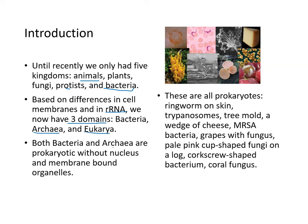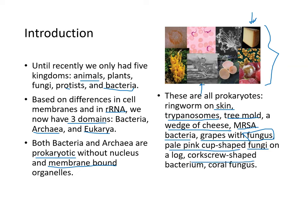Both bacteria and archaea are prokaryotes without nucleus or membrane-bound organelles. Examples of prokaryotes include ringworm on skin, trypanosomes, tree mold, cheese made from a bacterial organism, MRSA (methicillin-resistant Staphylococcus aureus), grapes with fungus, pale pink cup-shaped fungi on a log, a corkscrew-shaped bacterium, and coral fungus.